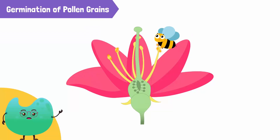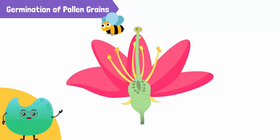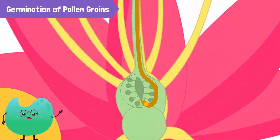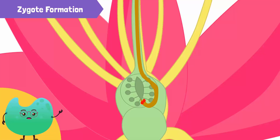The first step is the germination of pollen grains. After pollination, the pollen grains that are trapped by the stigma germinate. The pollen grows into a long pollen tube that extends down the style to enter the flower's ovary. Next, the nucleus of the pollen grain divides into two male gametes. Then, the pollen tube bursts and releases the male gametes inside the ovule.